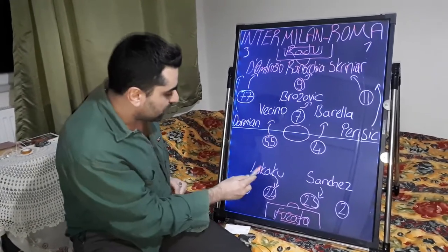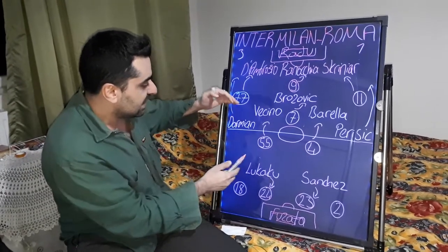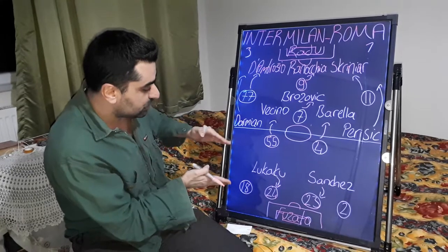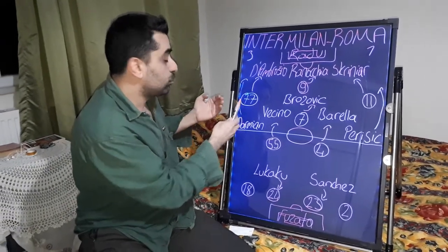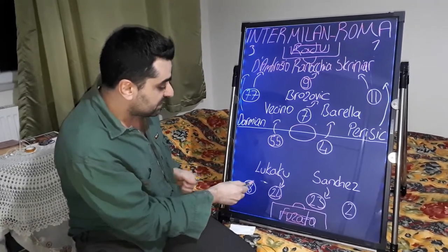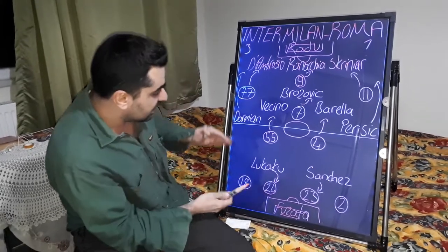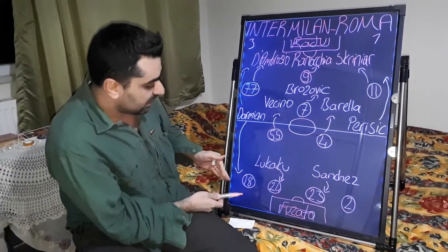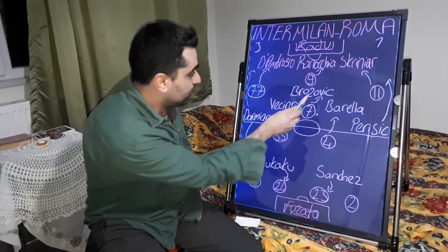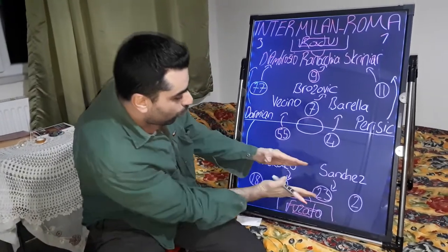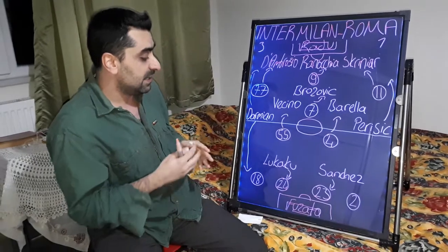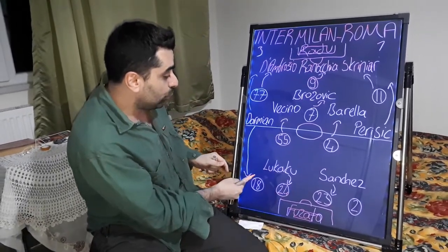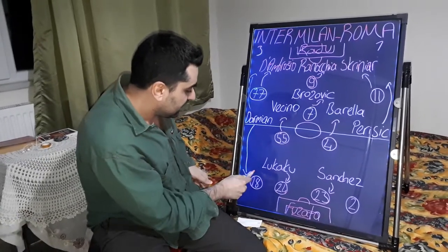Sometimes Lukaku came close to the right, and Vecino supported the attacks and also moved right. Inter overloaded the right zone of the pitch in the first half. Lukaku stayed higher and couldn't come back, while Santon tucked infield, creating empty spaces on the right. In the first goal, Darmian carried the ball forward and played it back. Brozovic came to the front of Roma's box, with nobody able to hold him, and he scored the goal for Inter Milan with an assist from Darmian.